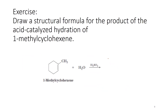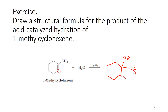Now let's look at this exercise: draw a structural formula for the product of the acid-catalyzed hydration of 1-methylcyclohexene. I have the double bond, and this carbon carries the least number of hydrogens, while the other carbon carries the largest number of hydrogens. So I expect the breaking of the double bond, the addition of the hydroxyl to happen on that carbon, and the addition of hydrogen on the other. We would form 1-methylcyclohexanol.